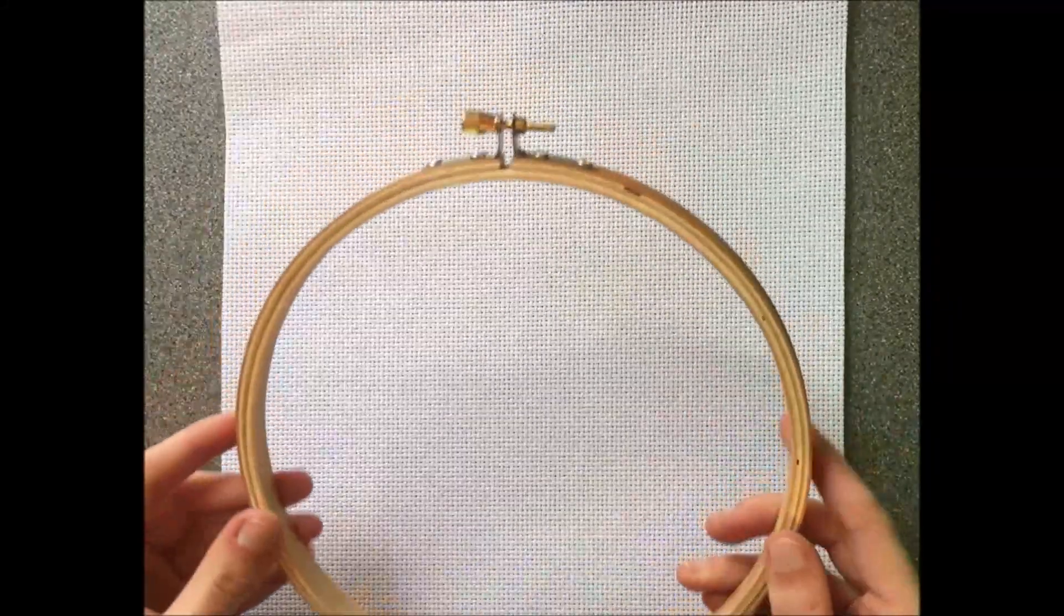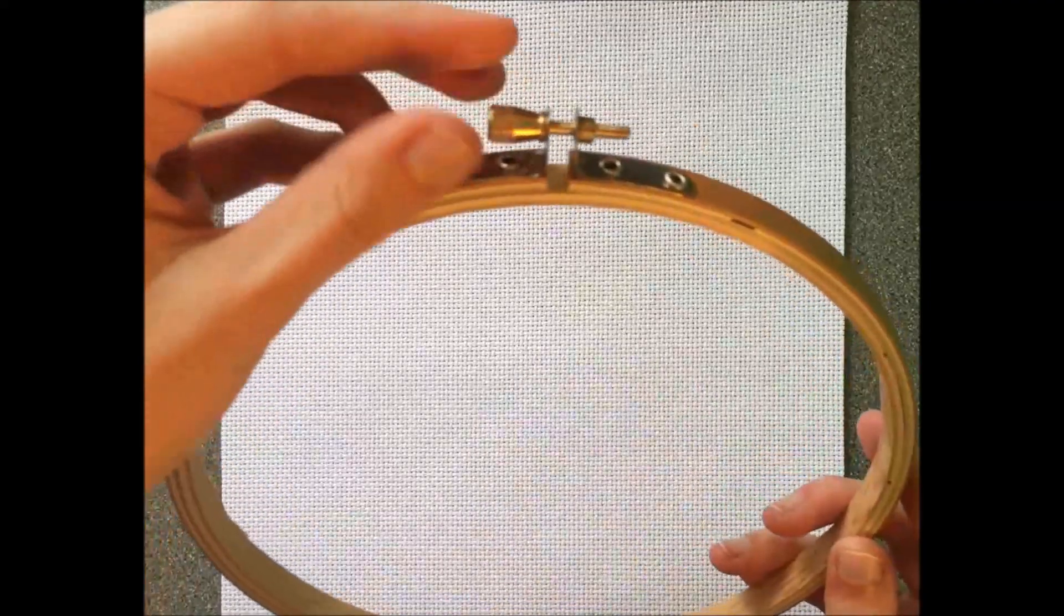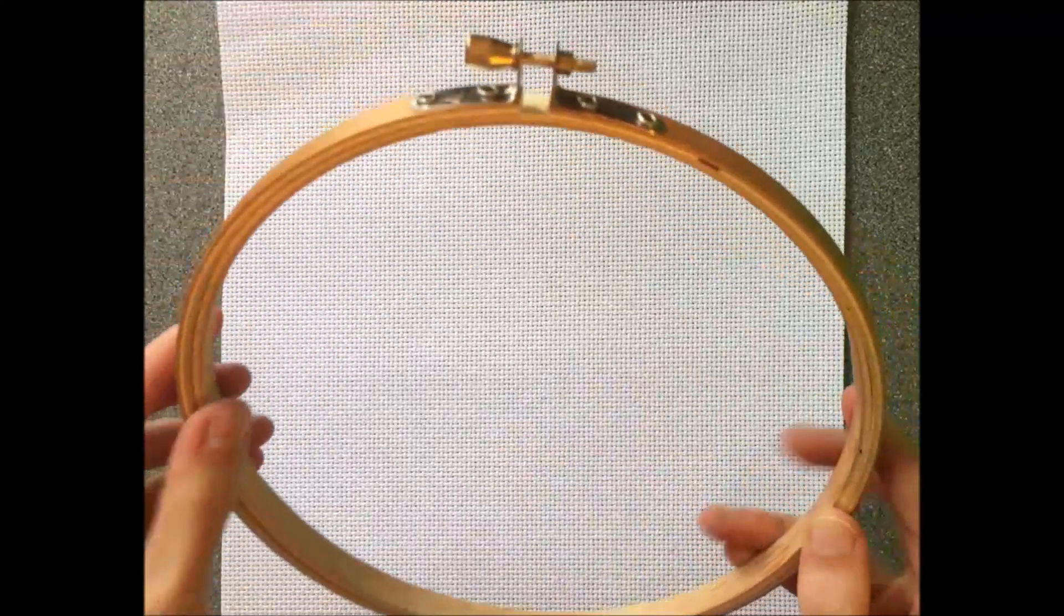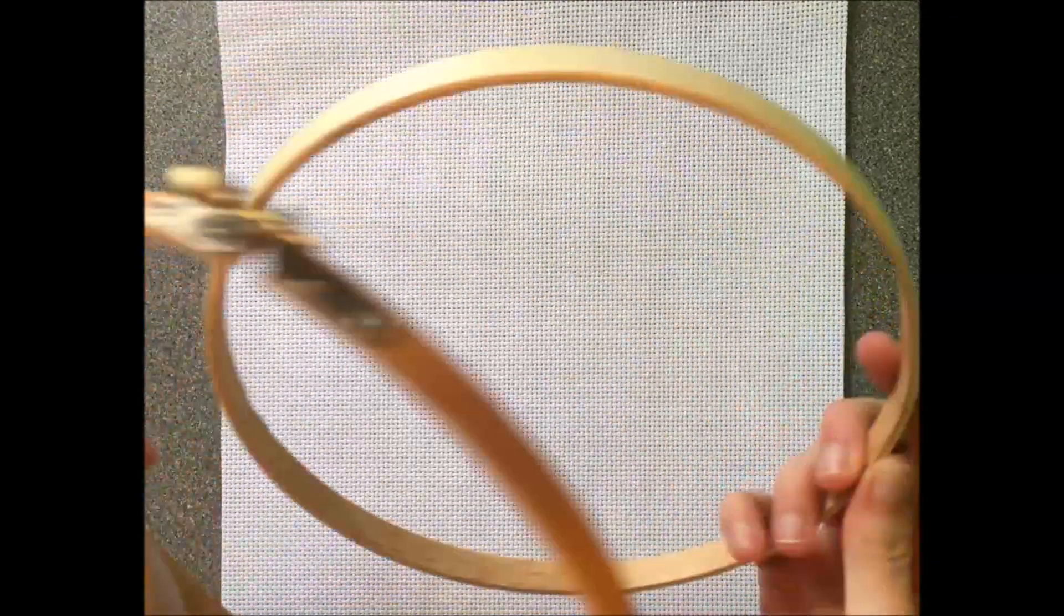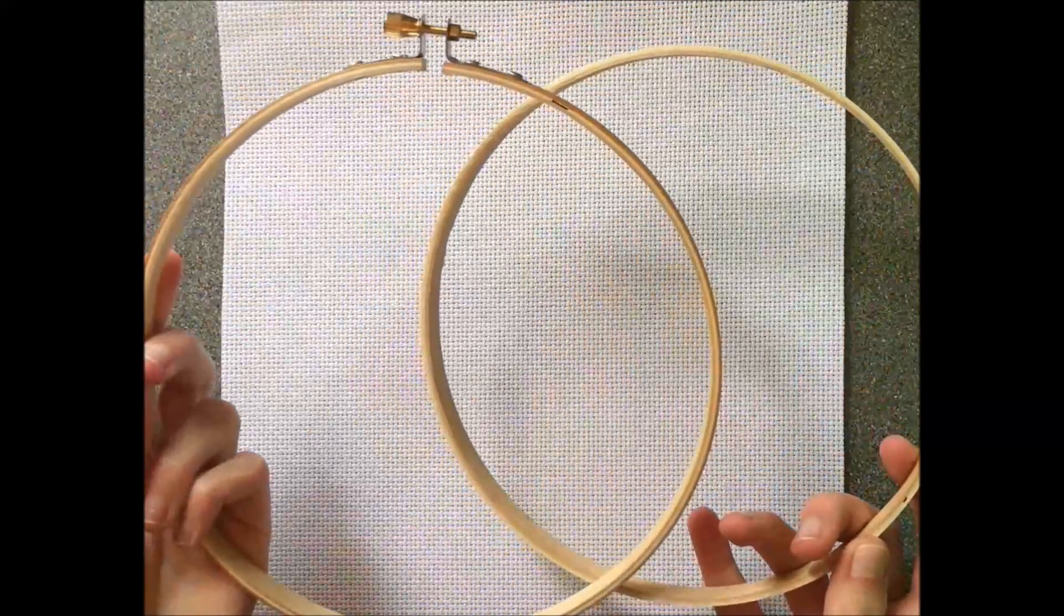So first what you want to do is unscrew the hoop by just twisting this little knob right here, and then that'll allow you to take apart the two parts of the hoop.